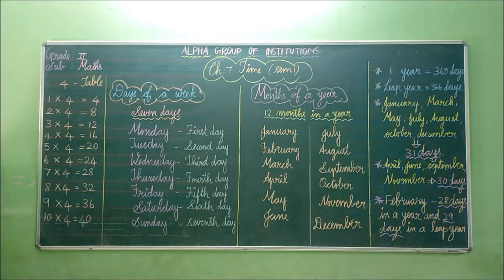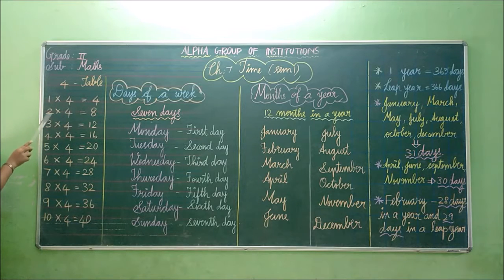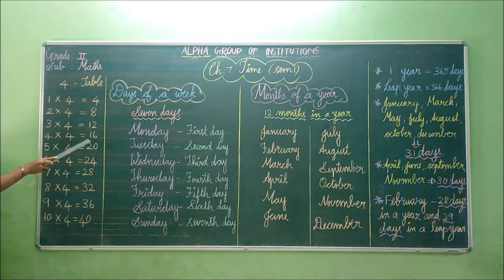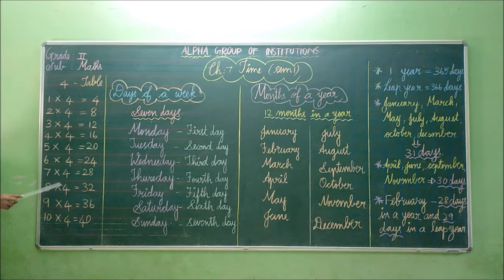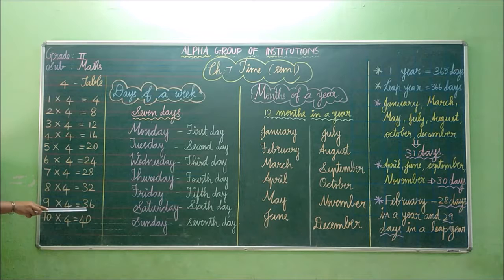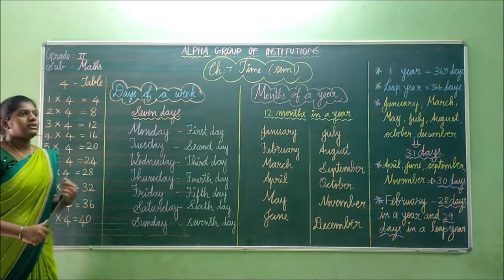Shall we read once again children? 1 four is 4. 2 fours are 8. 3 fours are 12. 4 fours are 16. 5 fours are 20. 6 fours are 24. 7 fours are 28. 8 fours are 32. 9 fours are 36. 10 fours are 40.